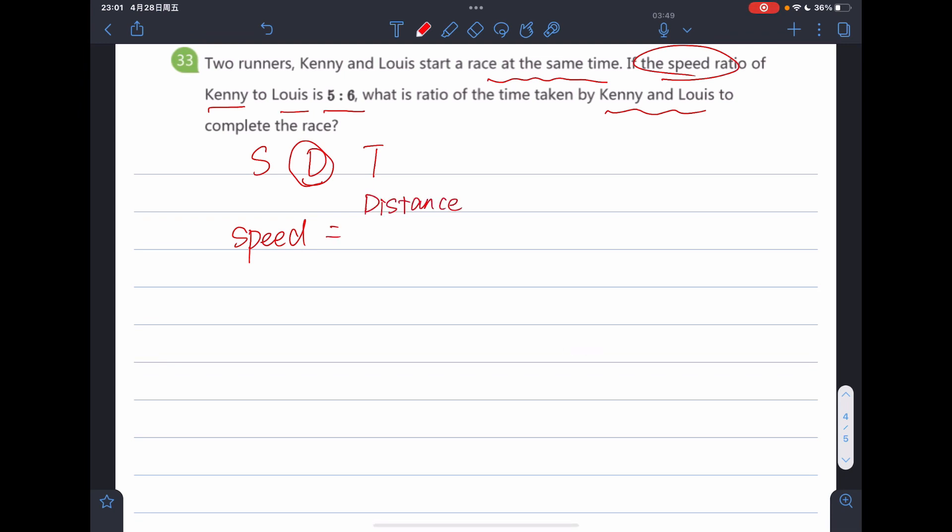Speed equals to distance divided by time. And in this problem, distance is fixed. And since both runners are racing the same distance, we can focus on the ratio of their speeds to find the ratio of the time they take to complete the race. We know that the speed ratio of Kenny to Luis is 5 to 6.